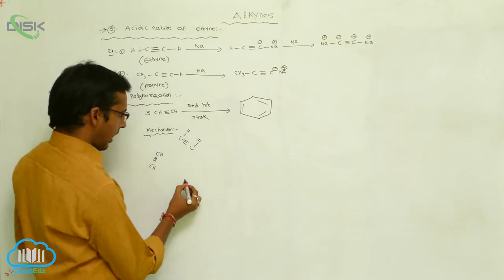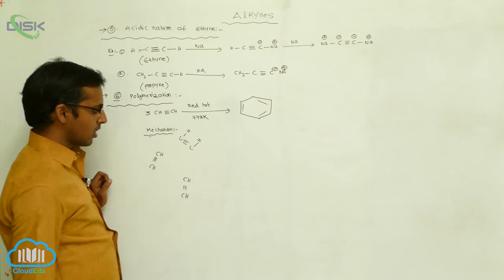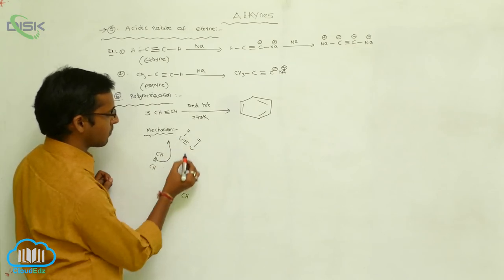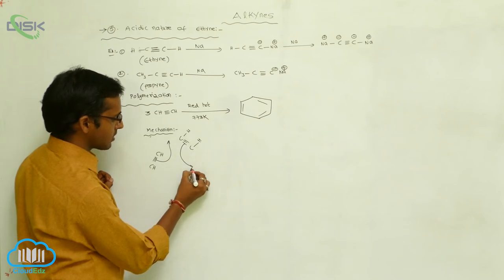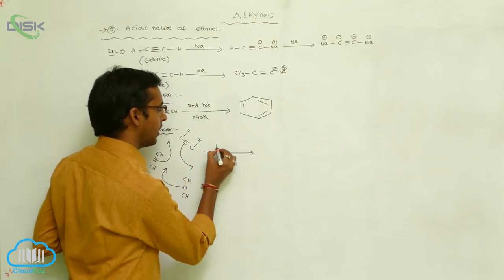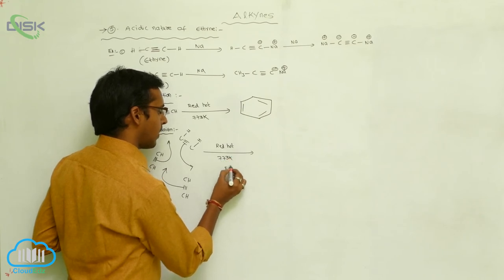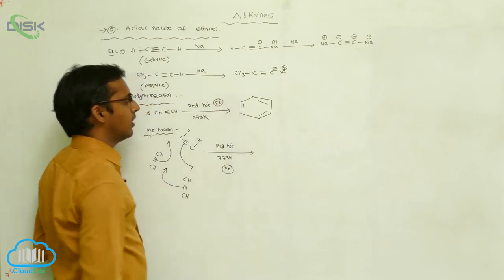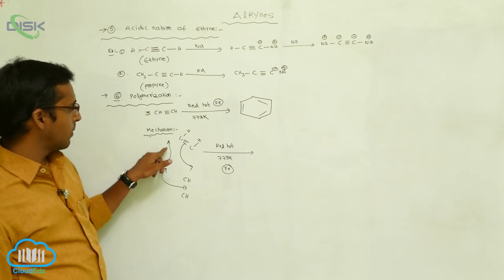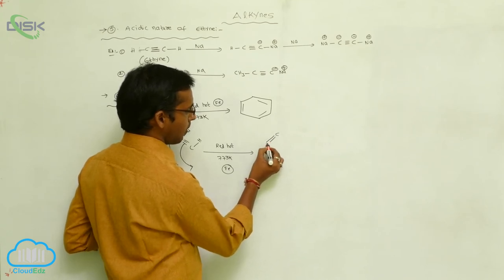Three moles of acetylene — each CH triple bond CH — come together. The triple bond's pi bonds are involved in sigma bond formation: one pi bond shifts into sigma bond formation, then another pi bond does the same, and again a third pi bond participates in sigma bond formation, in the presence of red hot conditions at 773 Kelvin with an iron rod.